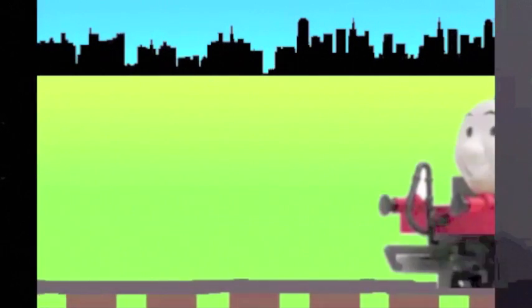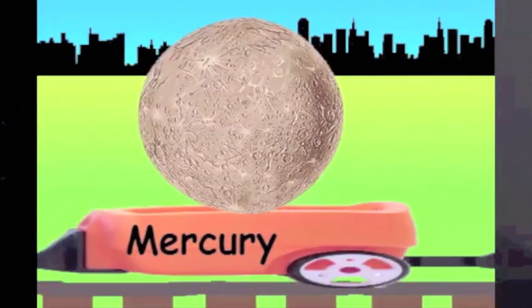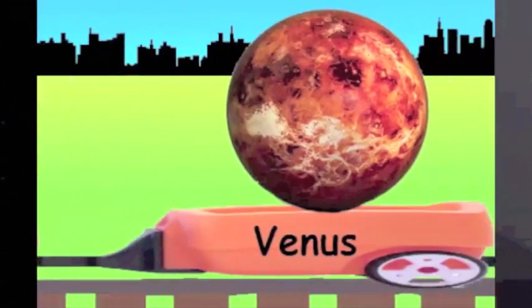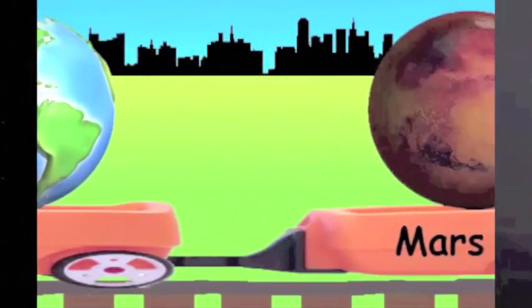Now let's see the planets once again. First planet, Mercury. Second, Venus. Third, Earth. Fourth, Mars.